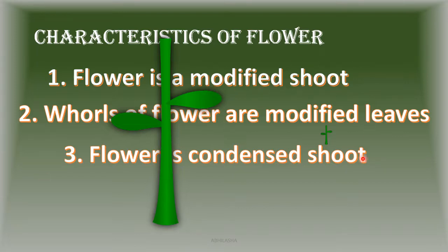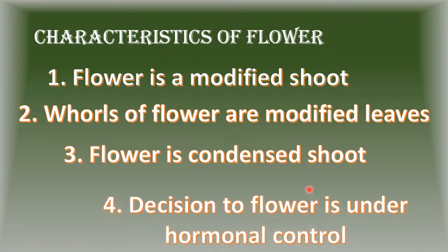As a result, the nodes come closer together, so this modified shoot appears thicker and shorter. Finally, when does the apical meristem start to behave like a floral meristem? This is under hormonal control as we discussed in the previous lesson. So probably a hormone by the name of florigen is responsible for the modification of apical meristem to floral meristem and a modified shoot that develops into a flower.